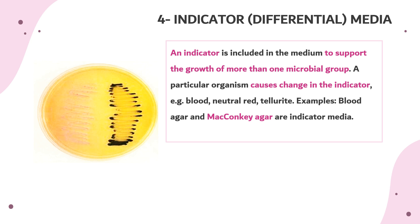The fourth type of routine media is indicator media, also called differential media. This media is supplemented by adding an indicator to support the growth of more than one microbial group. A particular organism causes a change in the indicator while others cannot. Blood, neutral red, and tellurite are good examples of indicator media.